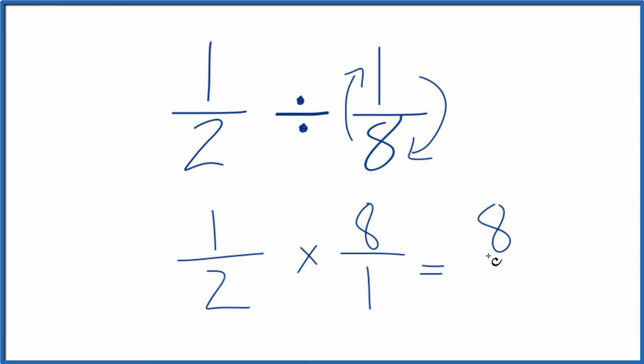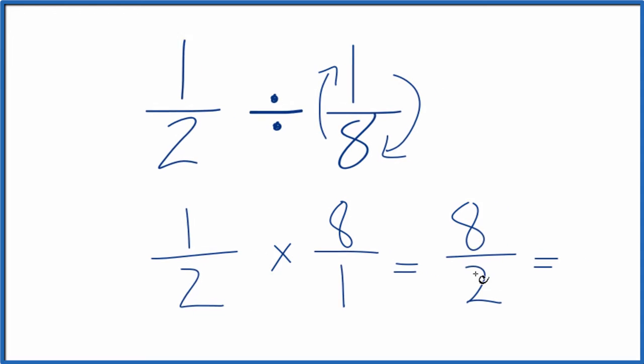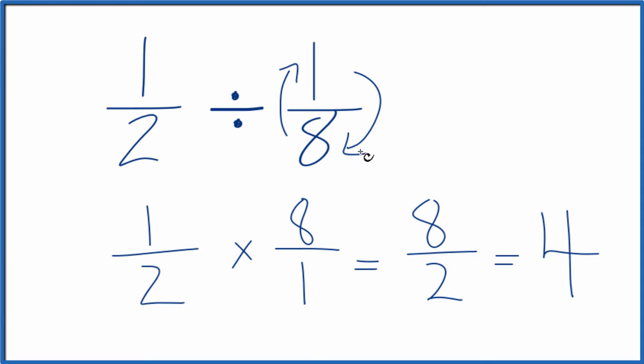1 times 8, that's 8. Divided by 2 times 1 is 2. And 8 over 2, 2 goes into 8 four times. 1 eighth divides into 1 half four times.